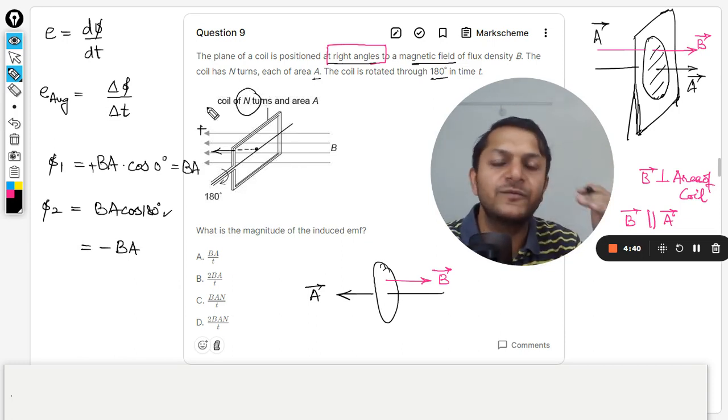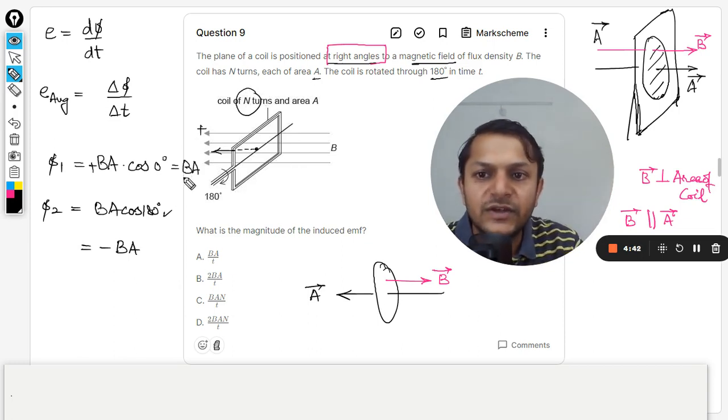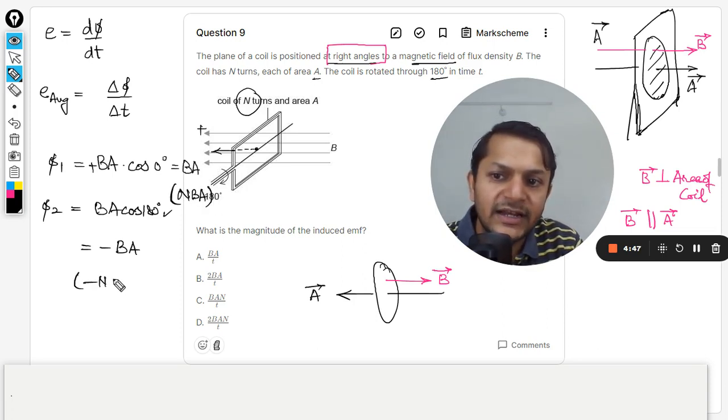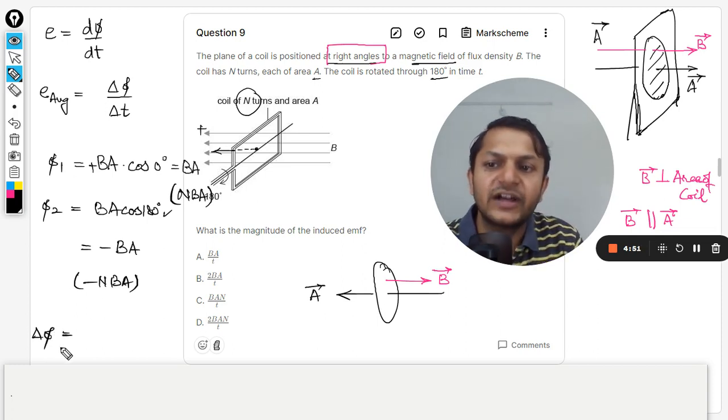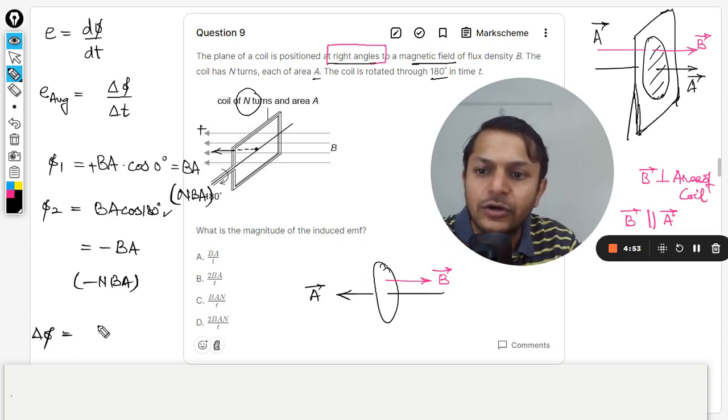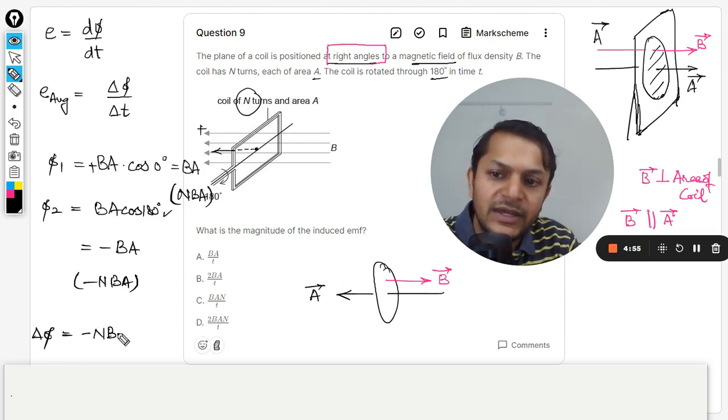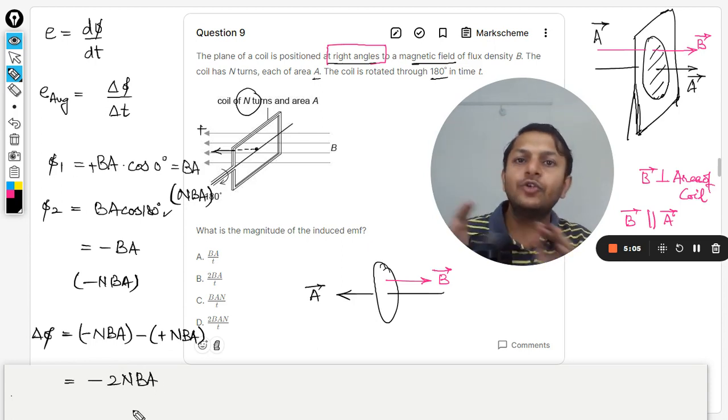So this will be 180, and cos 180 is negative one, so it will be negative B A. Now obviously there are N number of turns, so all of the flux will be multiplied by N. So this is becoming N B A, and this will also be negative N B A.